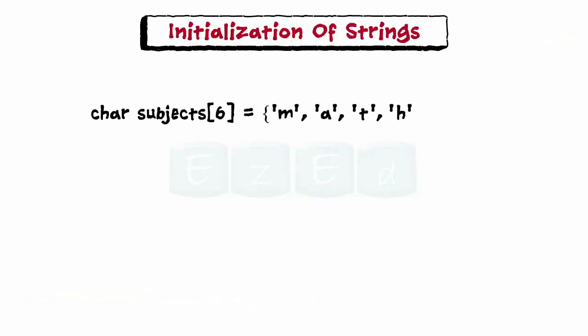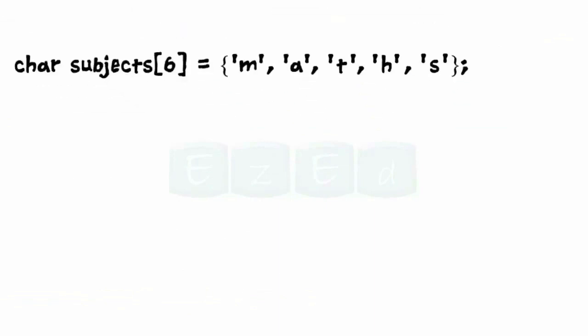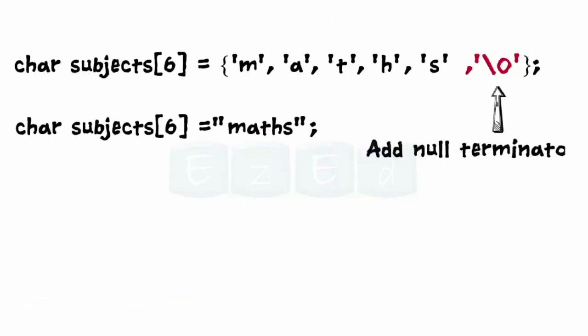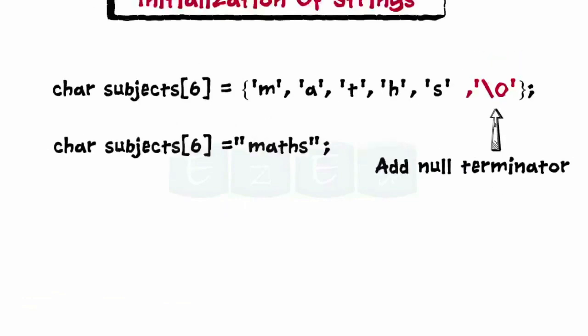Character arrays are initialized in the same way as numeric arrays — either by listing the individual elements, or by initializing the array by assigning it a string directly. When we initialize the string by explicitly listing its characters, we need to specify a null terminator at its end.